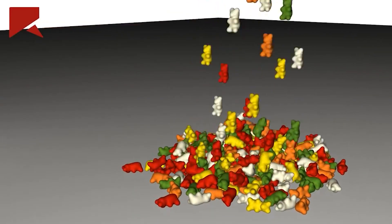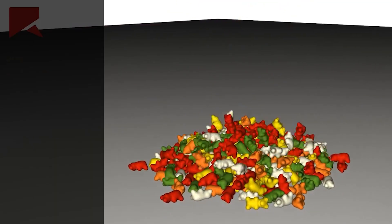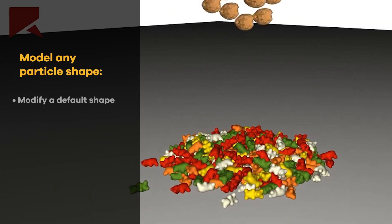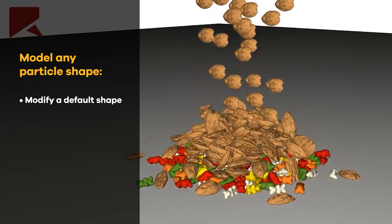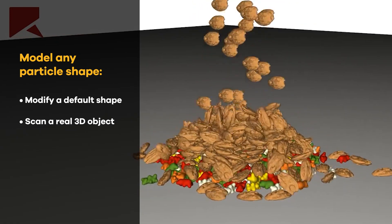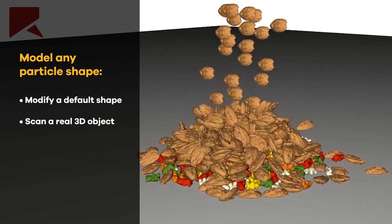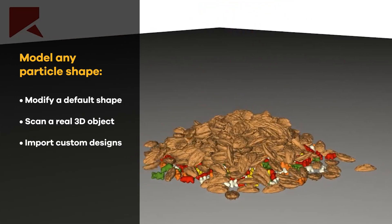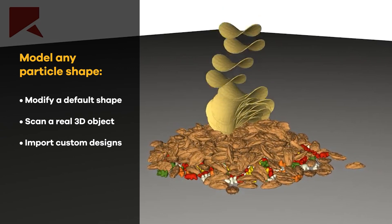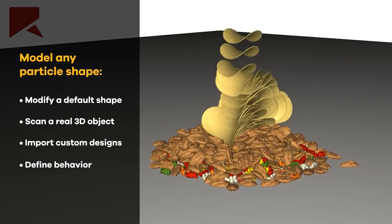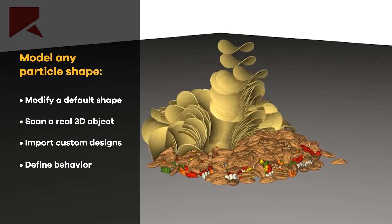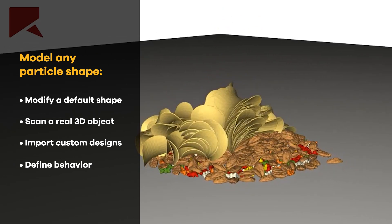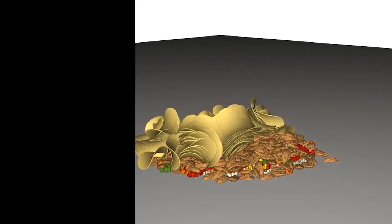In fact, ANSYS ROKI can handle any particle shape. You can modify a default shape, scan a real 3D object, or import your own custom design. Then define its behavior — is it rigid, flexible, sticky, dry, or breakable?